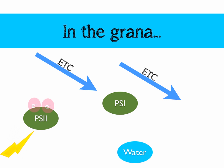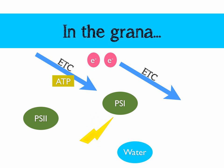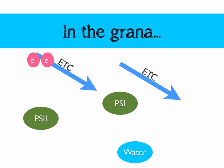Light hits photosystem 2, electrons are excited and travel down the first electron transport chain, producing ATP. Light then hits photosystem 1, and two high-energy electrons are released. But instead of going down the second electron transport chain, they go back to the first one and pass down that electron transport chain one more time, producing more ATP. This is cyclic photophosphorylation.